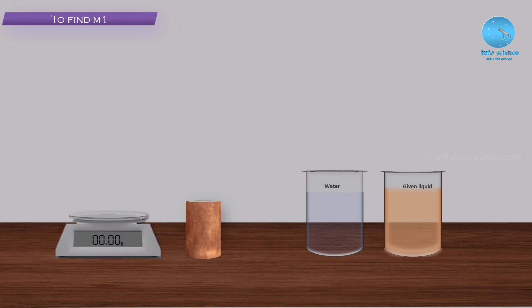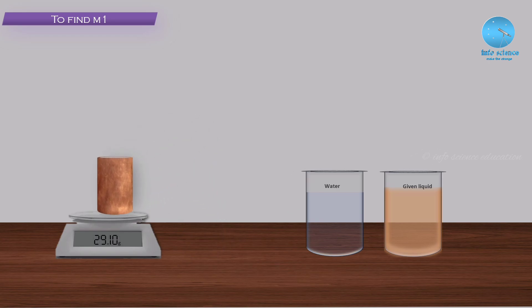First, we find the weight m1 — the mass of the calorimeter. A common balance or electronic weighing machine is used. The calorimeter weight is recorded as m1, which is equal to 29.1 grams.